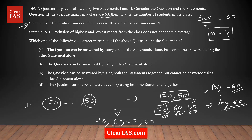So from Statement 1 alone, it is not possible to find a definite answer for the number of students. There are multiple possibilities — 2 students in one case, 3 students in another, 4 in yet another — multiple answers are possible. So Statement 1 alone is not sufficient, and option B is eliminated.